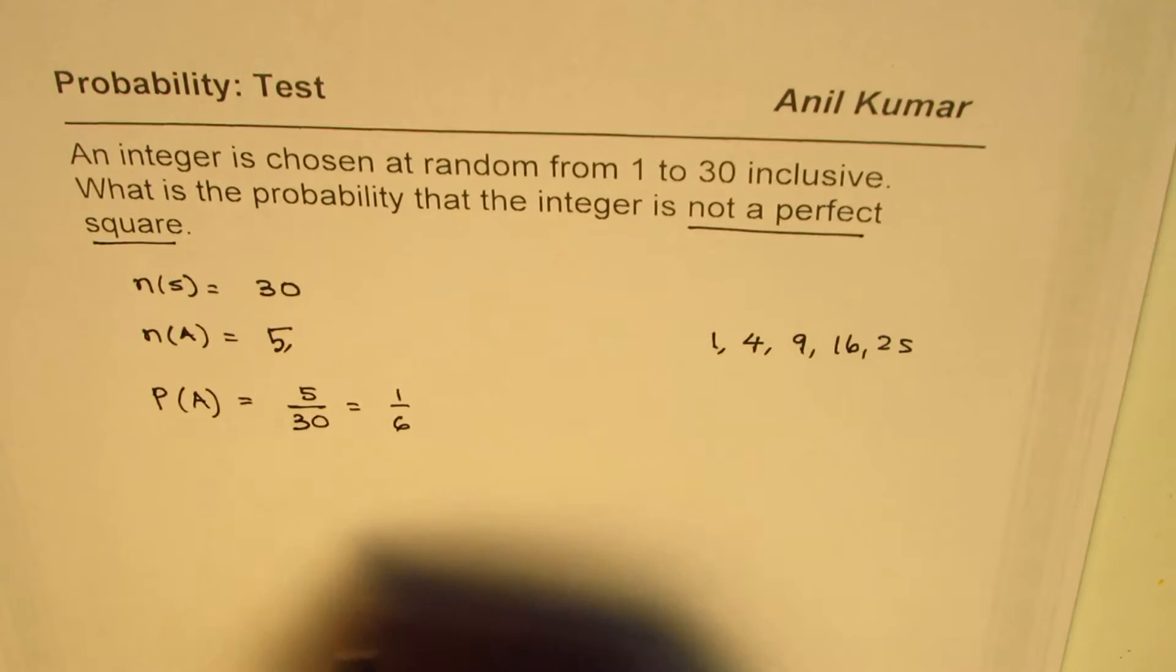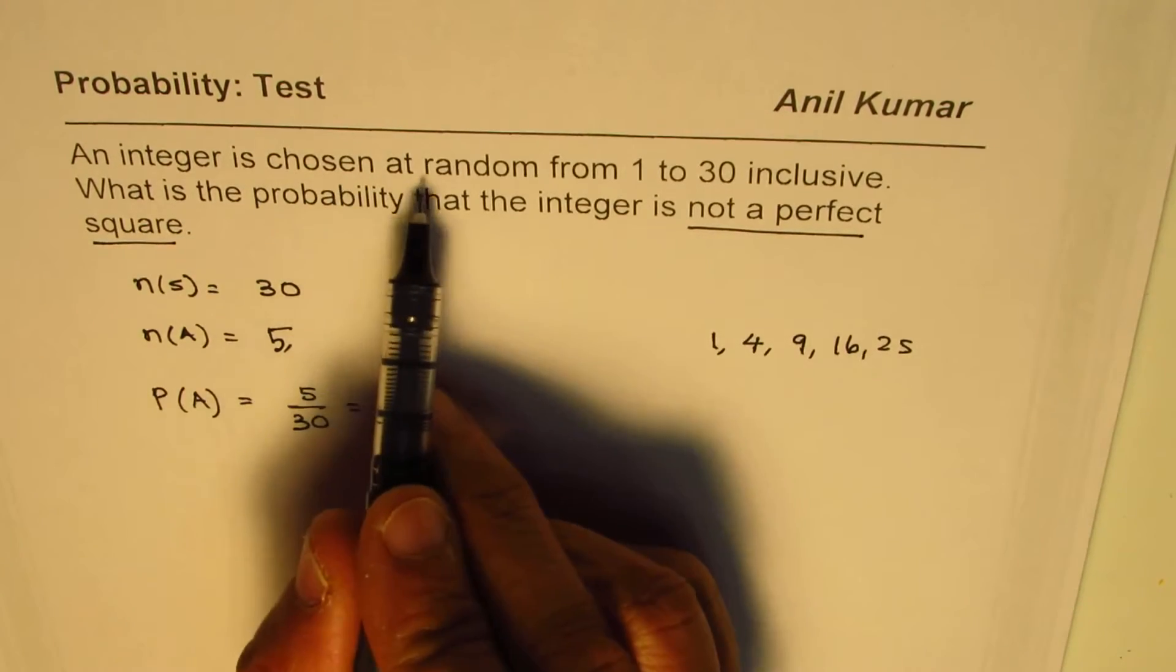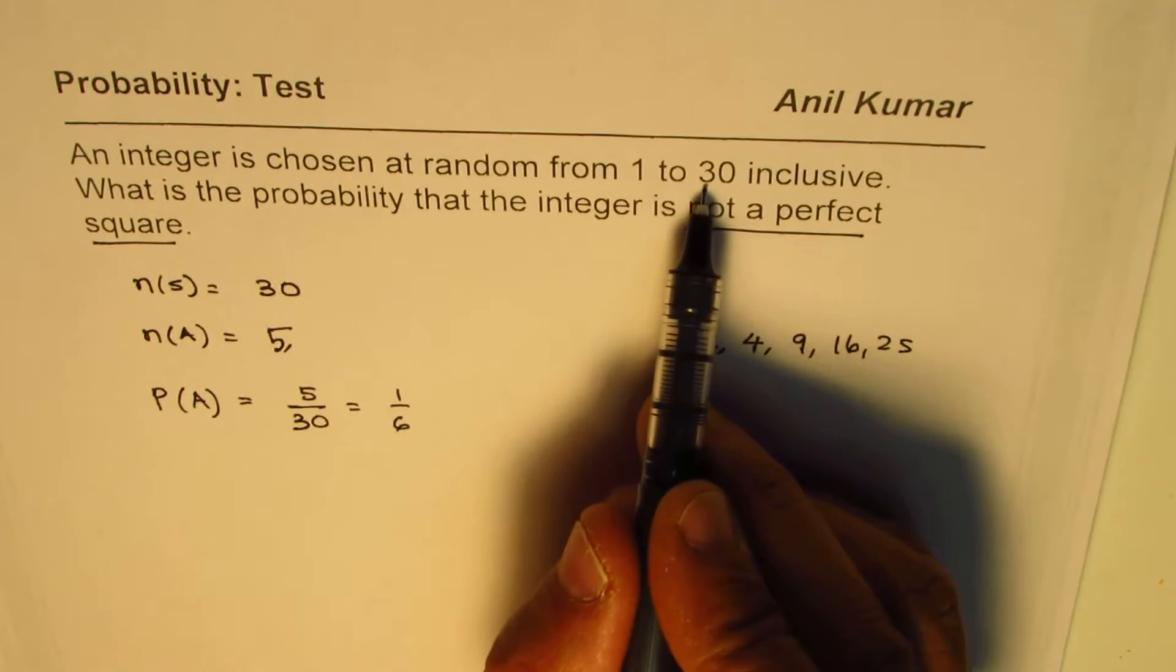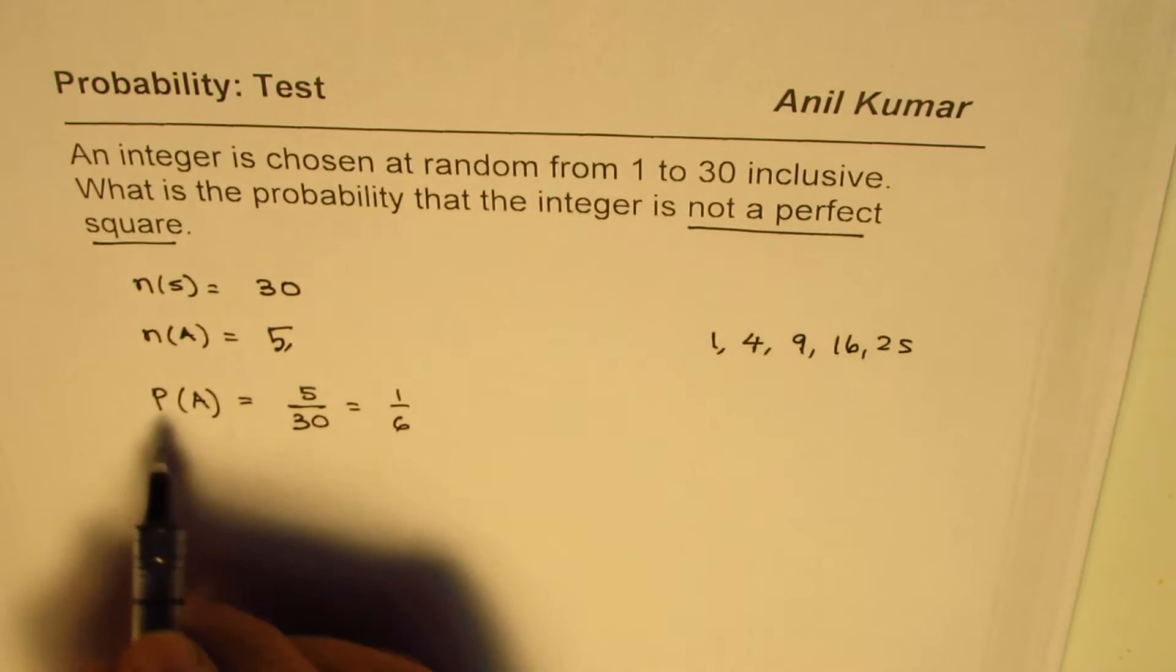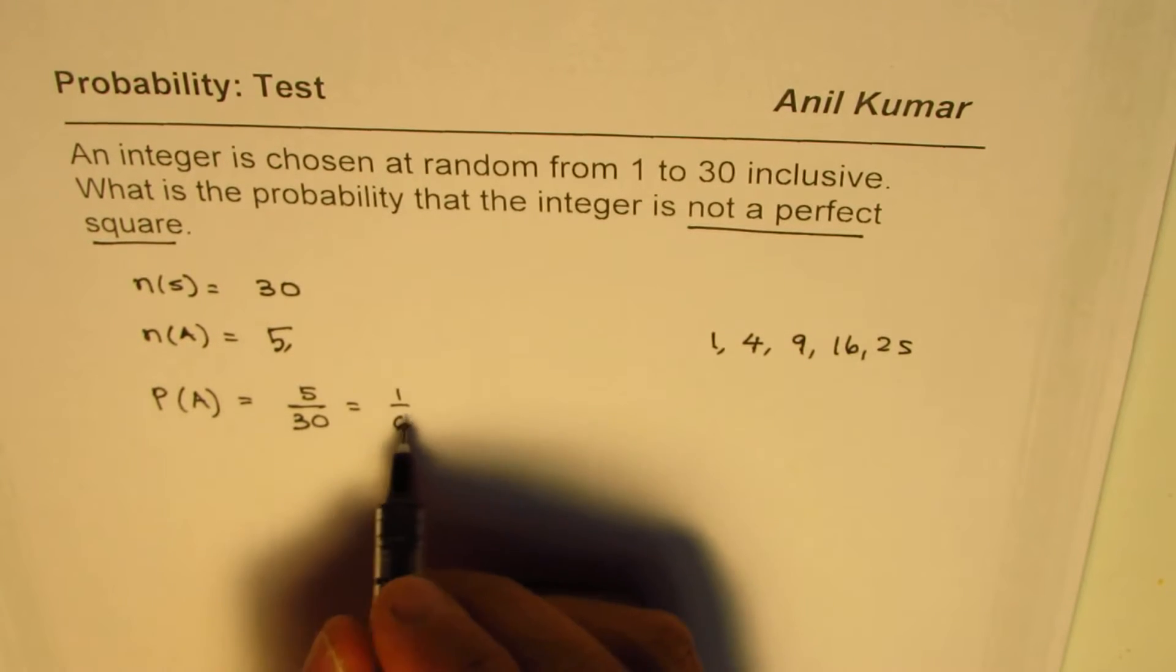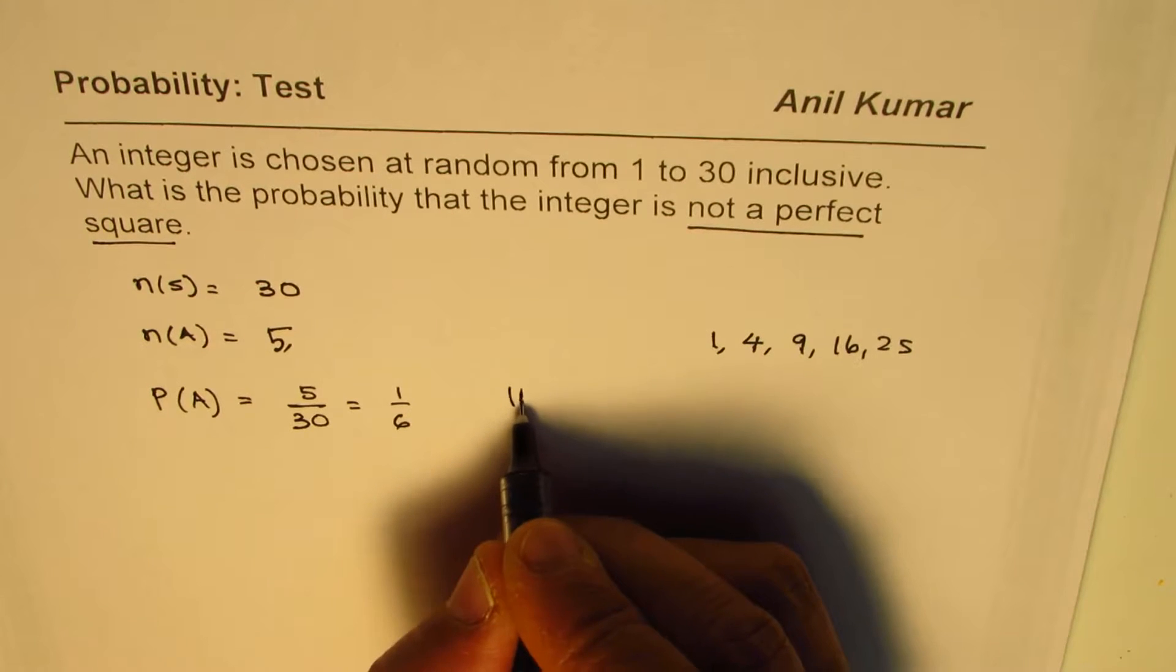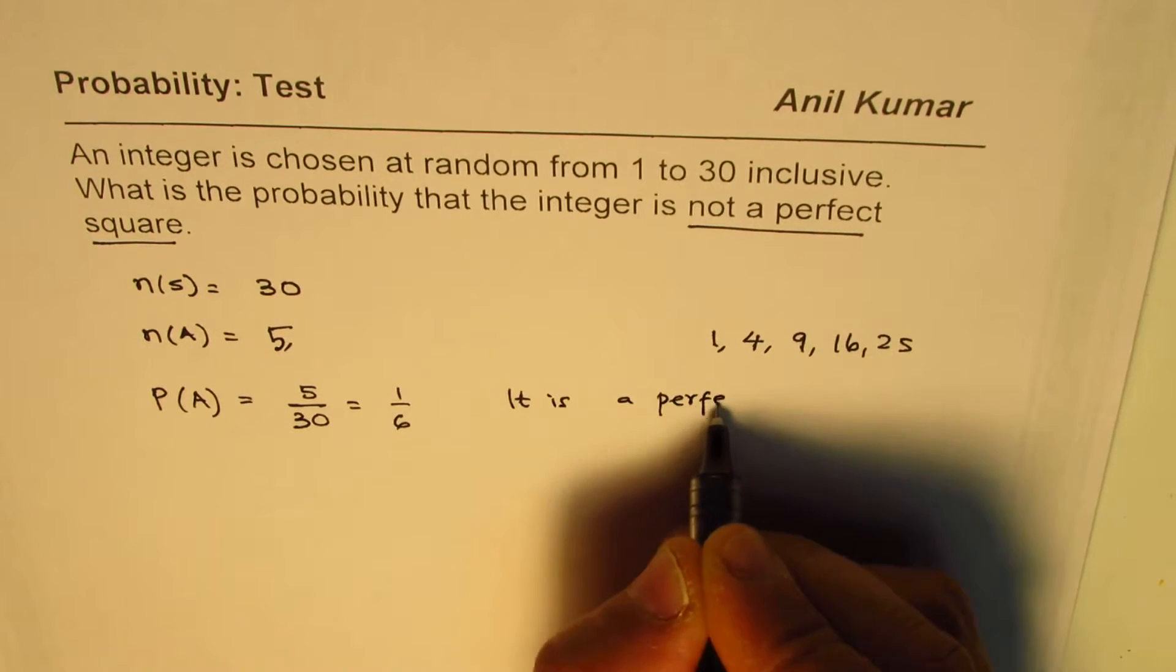The question is: an integer is chosen at random from 1 to 30 inclusive, what is the probability that the integer is not a perfect square? Well, this is the probability where it is a perfect square—this is what we found.